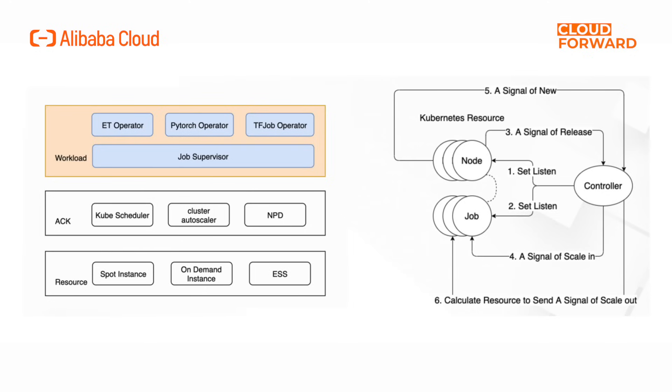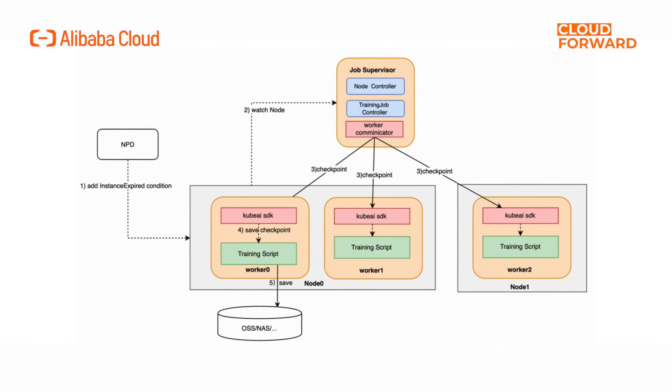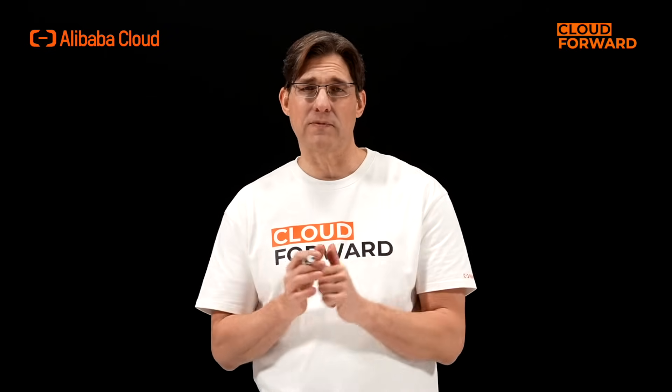The ACK cloud-native AI suite's elastic training for spot instance scenarios provides the following capabilities. Max wait time: if the resource request for a training task cannot be met within the maximum waiting time, the task terminates to avoid waste caused by some workers applying for resources. Checkpoint saving: with instance recovery notification mechanisms, training tasks automatically perform a checkpoint save operation upon receiving preemptible instance recovery notifications to prevent lost training results. Fail tolerance: when part of the instances are recovered, the distributed training task can continue running without interruption, ensuring it doesn't stop due to the recovery of some workers.